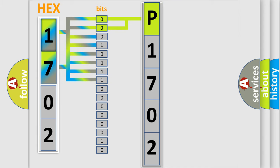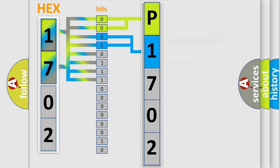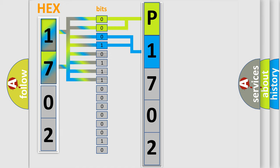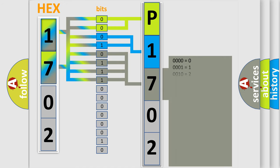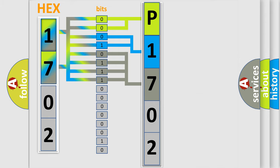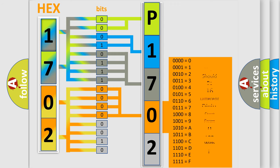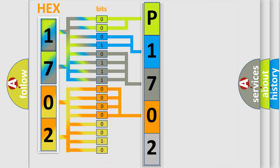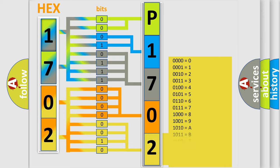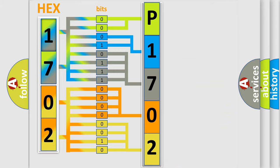The next two bits again determine the second character. The last bit styles of the first byte define the third character of the code. The second byte is composed of a combination of eight bits. The first four bits determine the fourth character of the code, and the combination of the last four bits defines the fifth character. A single byte conceals 256 possible combinations.